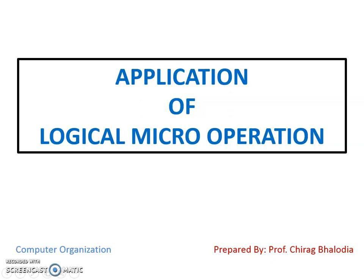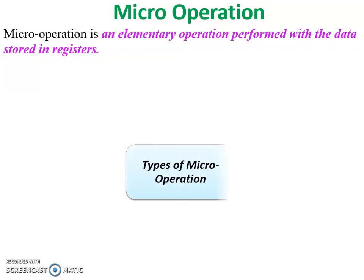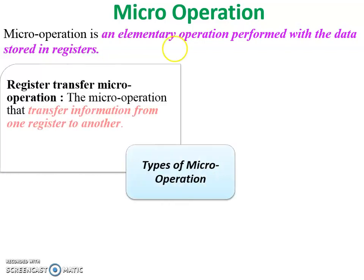Hello friends, myself Jirag. Today I am going to discuss application of logical micro operation, a topic of computer organization and architecture. First of all, what is a micro operation? A micro operation is an elementary operation performed with the data stored in a register. There are mainly four types. One is register transfer micro operation, in which data or bits transfer from one register to another register.